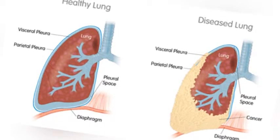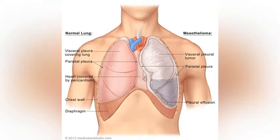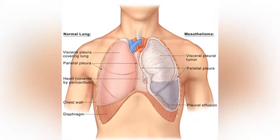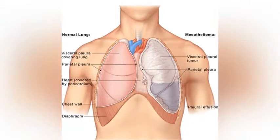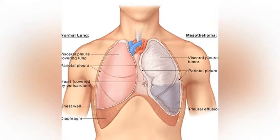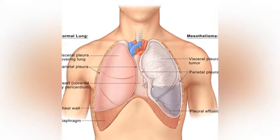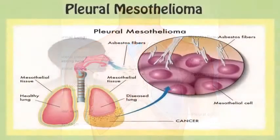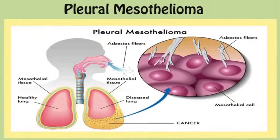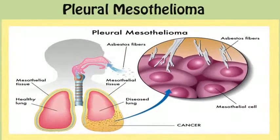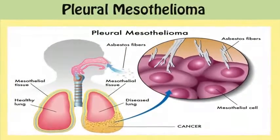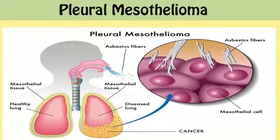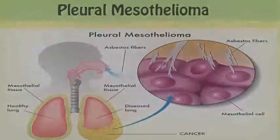In this procedure, the doctor makes a small cut through the chest wall and puts a thin tube called a thoracoscope into the chest between two ribs. The thoracoscopy allows the doctor to look inside the chest and obtain tissue samples. Alternatively, the chest surgeon might directly open the chest — thoracotomy. If the cancer is in the abdomen, the doctor may perform a laparoscopy.